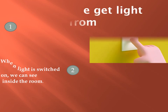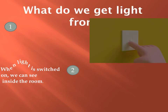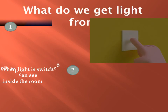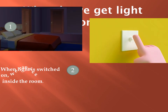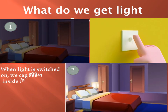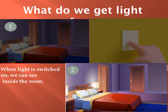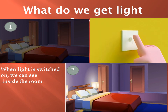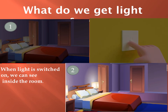What do we get light from? Can we see anything clearly inside the first room? No. It is because the light is not switched on. When light is switched on, we can see inside the room. Things that give us light are called sources of light.